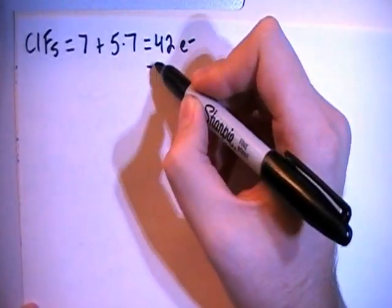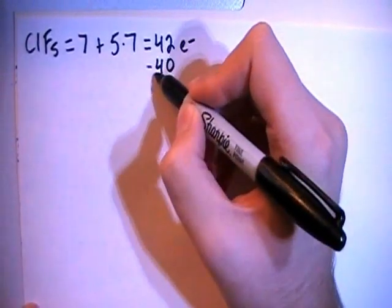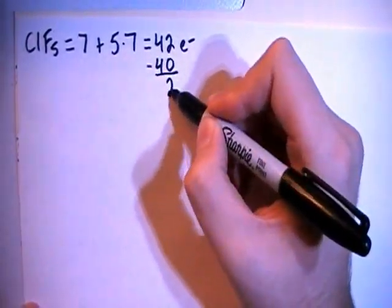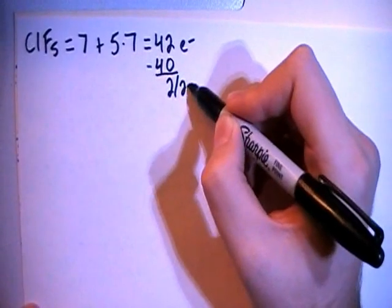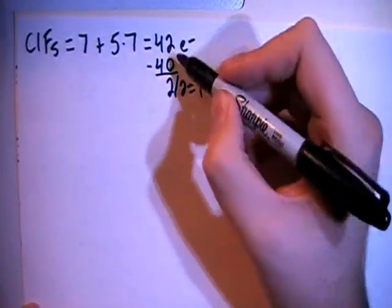We can go ahead and subtract out the largest multiple of 8, which in this case will be 40, giving us 2 remaining, divide that by 2, which gives us 1 non-bonding pair.